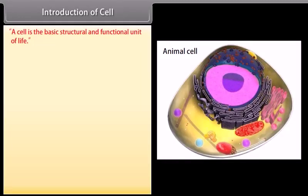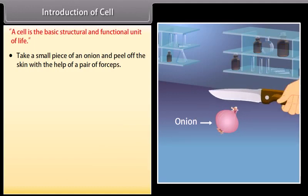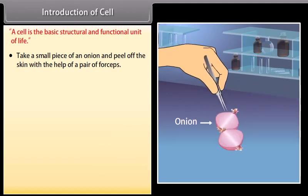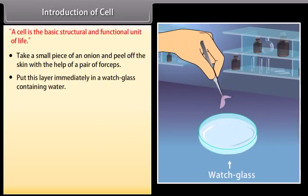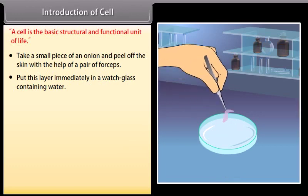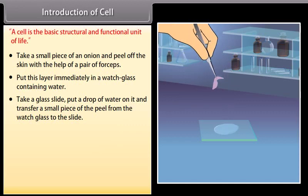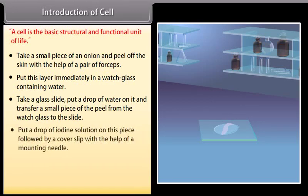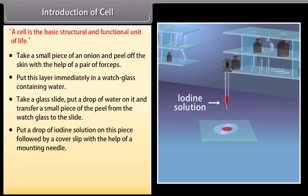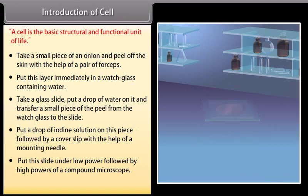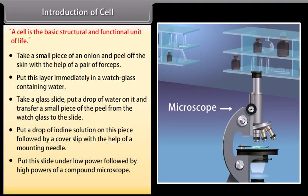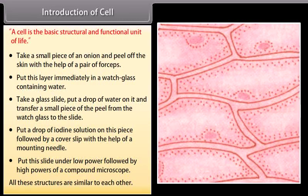A cell is the basic structural and functional unit of life. Experiment: take a small piece of an onion and peel off the skin with the help of forceps. Put this layer in a watch glass containing water, then transfer a small piece to a glass slide with a drop of water. Add a drop of iodine solution, place a cover slip, and observe under low power followed by high powers of a compound microscope. All these structures are similar to each other.